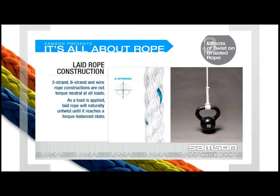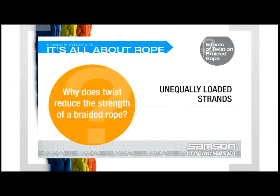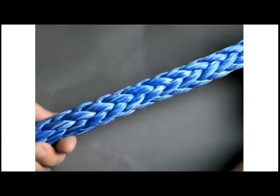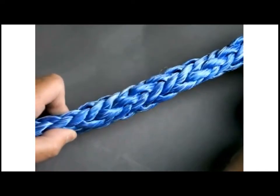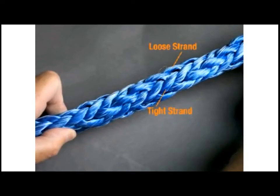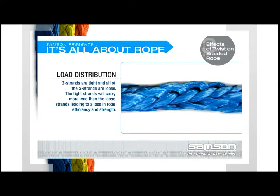When a braided rope that has been twisted is loaded, the strands become loaded unequally. Depending on the direction of twist, either the S- or Z-strands will take more of the load. Here, all of the Z-strands are tight and the S-strands are loose. The loose S-strands will not bear the same load as the tight Z-strands. The tight strands will carry more load than the loose strands, leading to a loss in rope efficiency and reduced strength.